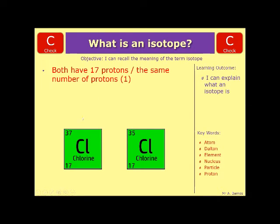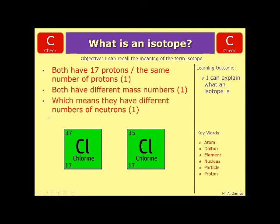Your second mark is for saying what is different. Which in this case is they both have different mass numbers. This one's 37, this one's 35. You can push that a bit further and go into what is the actual difference then. Because if the protons are the same, the thing that's got to be different to make up that number is the neutrons.